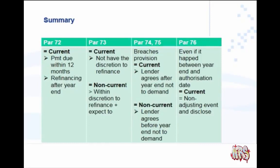Paragraph 76 says we have classified these liabilities as current and the event happened between year end and the authorization date. It is a non-adjusting event and therefore we disclose it in terms of IAS 10 as a non-adjusting event. In the next slides, we will be looking at an example and the solution.